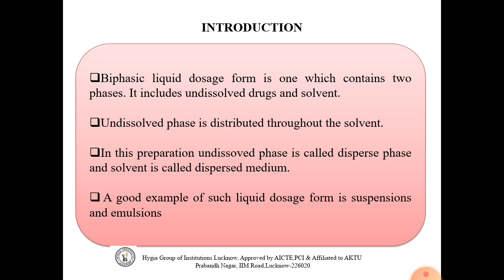Biphasic liquid dosage forms are ones which contain two phases. They include undissolved drug and solvent. Undissolved drug means solute, and solvent means the vehicle in which the drug is going to be miscible. The undissolved phase is distributed throughout the solvent.